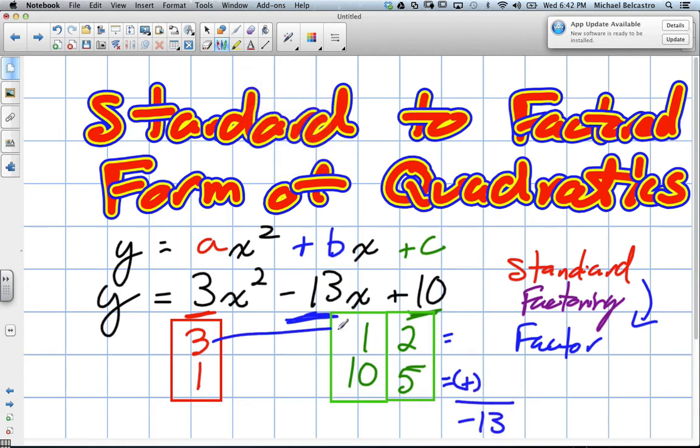So we test these out. 3 by 1 and 1 by 10 gives us 3 and 10. When will those become negative 13? If one of them was negative? Actually, if both were negative. So if both of these were negative, in this case 3 and 10.